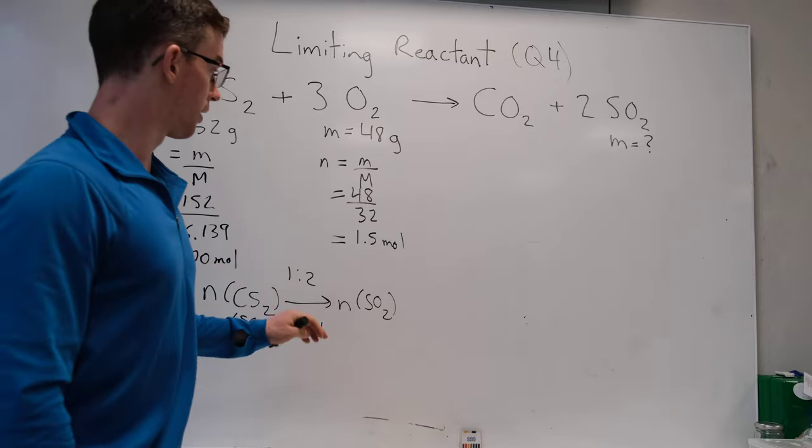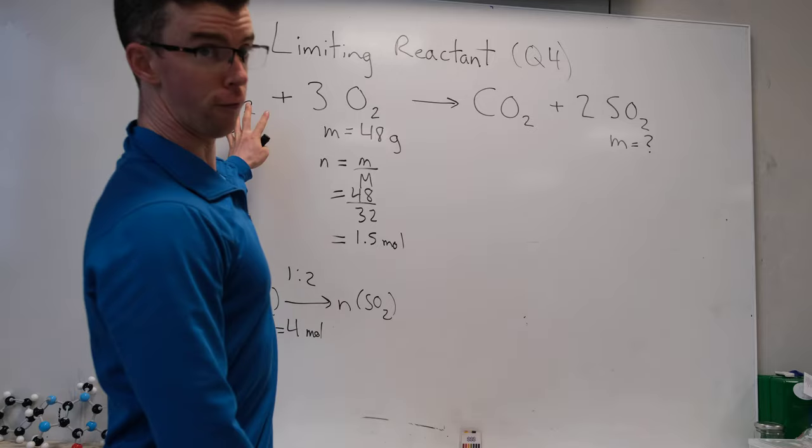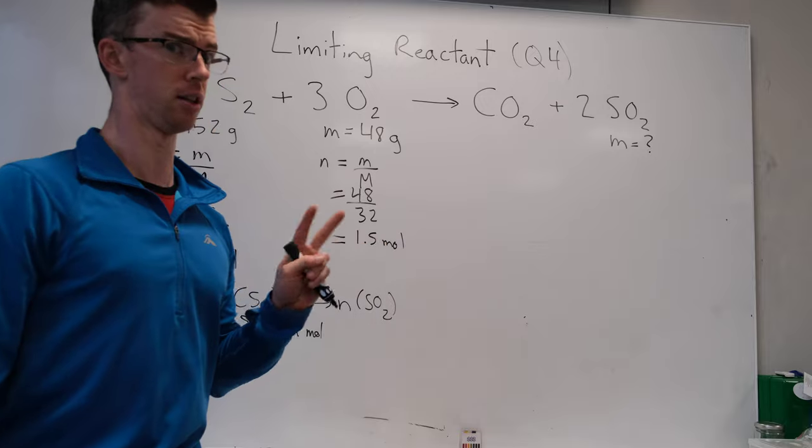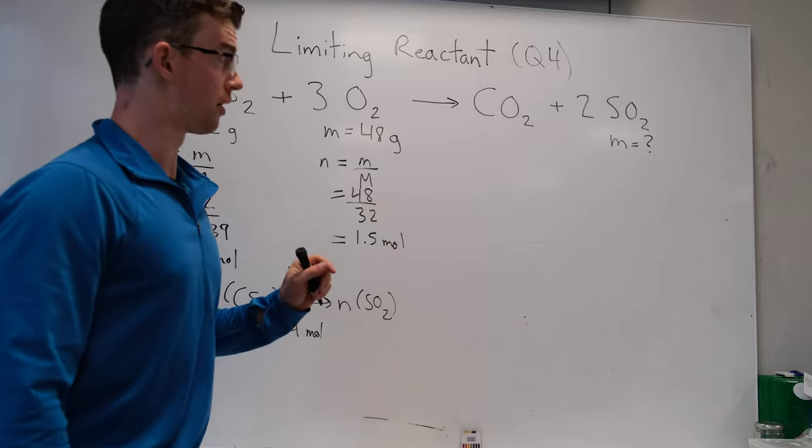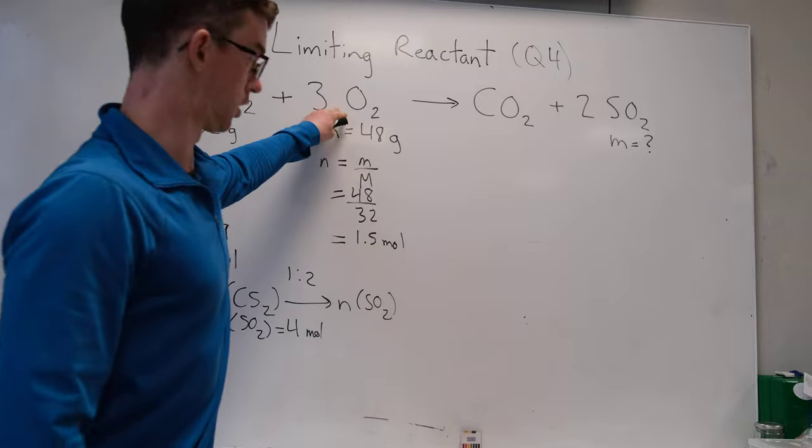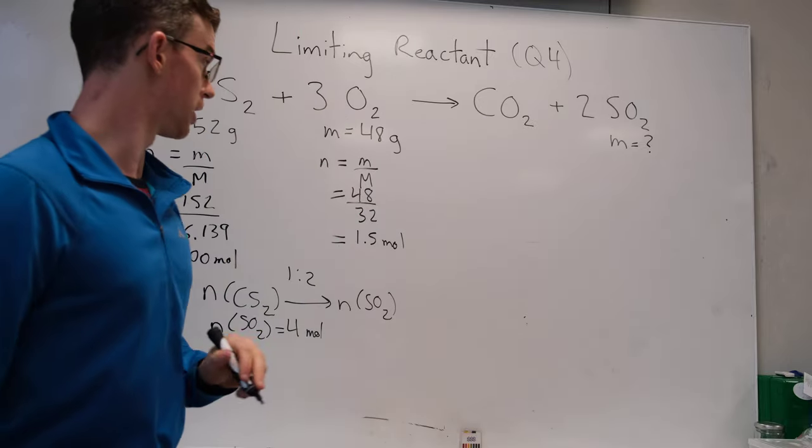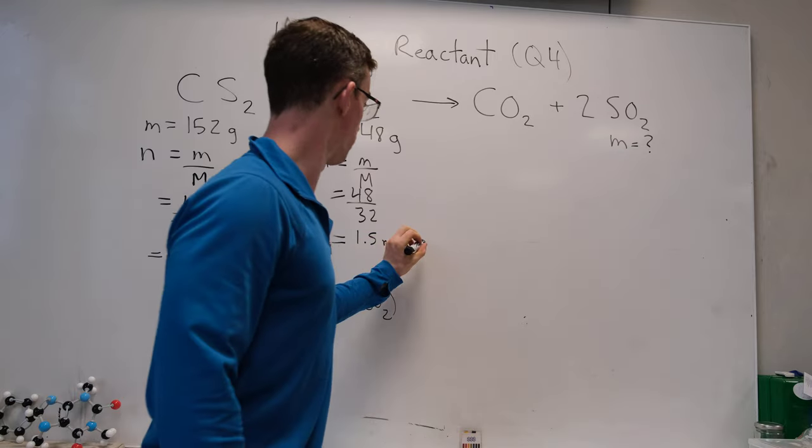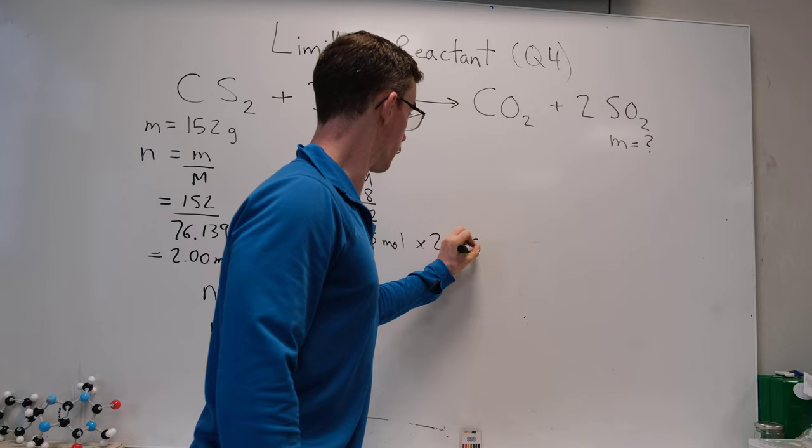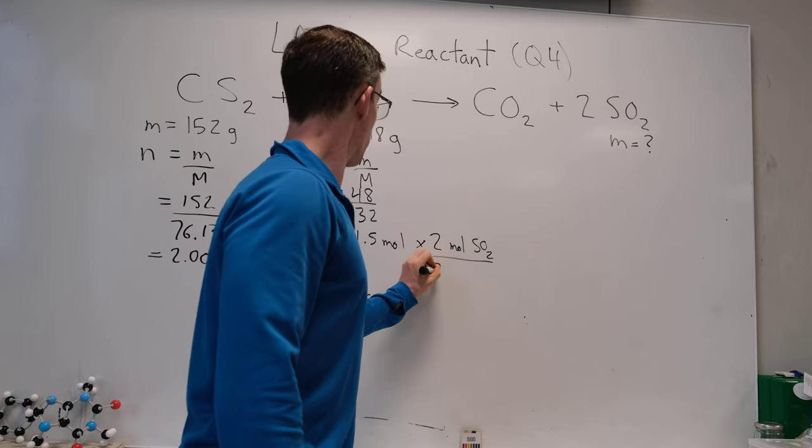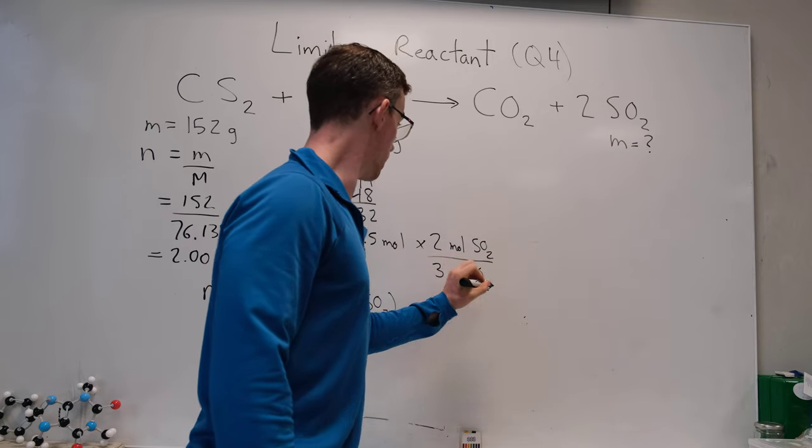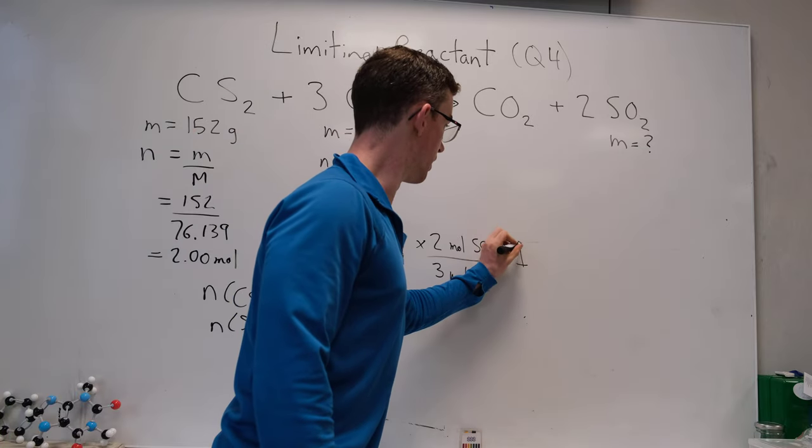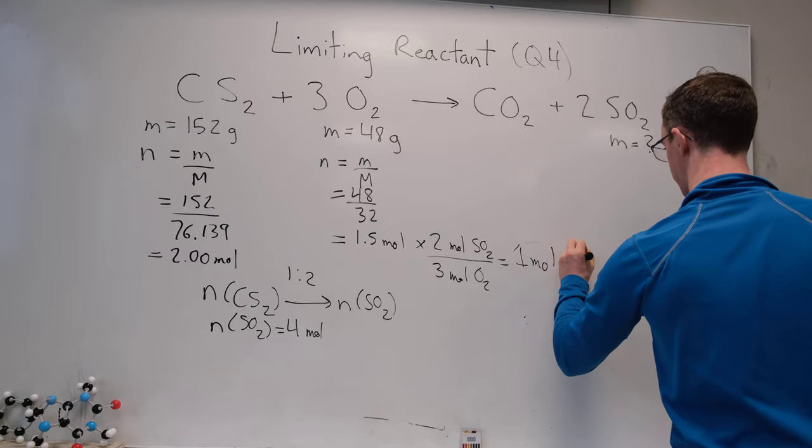Now let's find out if we had unlimited amount of carbon disulfide and just this amount of oxygen, how much product could we make in this second scenario? So once again, we're going to apply the stoichiometric ratio between oxygen this time and our product. So it's a 3 to 2 ratio. So we're going to need to take this number of moles and multiply it by 2 moles of sulfur dioxide for every 3 moles of oxygen. And we're going to find that we can only make 1 mole of sulfur dioxide.